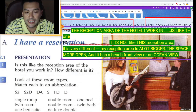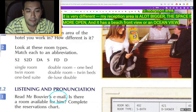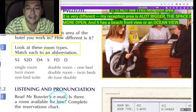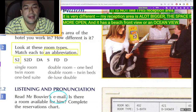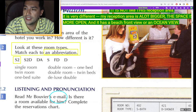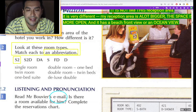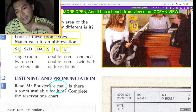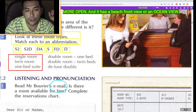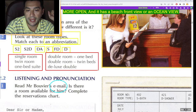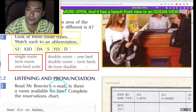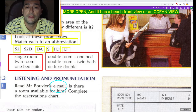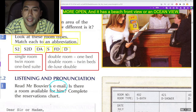Now look at these types of rooms — room types, exercise 2. Look at these room types and match each to an abbreviation. We've got S2, S2D, DA, S, FD, D. And the options are: single room, twin room, one-bed suite, double room one bed, double room twin beds, and deluxe room. Let's take a look at the abbreviations.